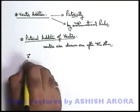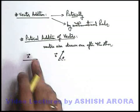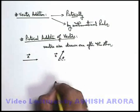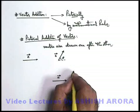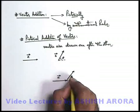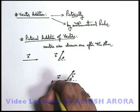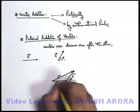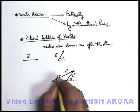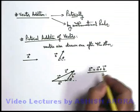Say we have two vectors: vector A and vector B, which is at an angle theta. To add the two vectors pictorially, I'll add one vector to the other just by drawing it after the other. If I'm having vector A and I put vector B just after it — the starting point of B is placed at the end point of vector A — then drawing a line from the starting point of A to the end point of B gives us a new vector C, which represents the addition of these two vectors. So C vector equals A vector plus B vector.